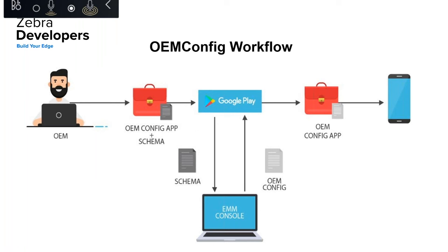Here is a pictured representation of the OEM Config workflow. When any new feature gets implemented, Zebra publishes the new APK along with the new schema to the Play Store. EMMs can access this APK and schema via Managed Play Store. In the EMM console, a data-driven UI will be shown using the schema retrieved from the Play Store. The admin selects managed configurations and applies the policy to the device, where the OEM Config APK gets installed and the configuration policies are pushed.